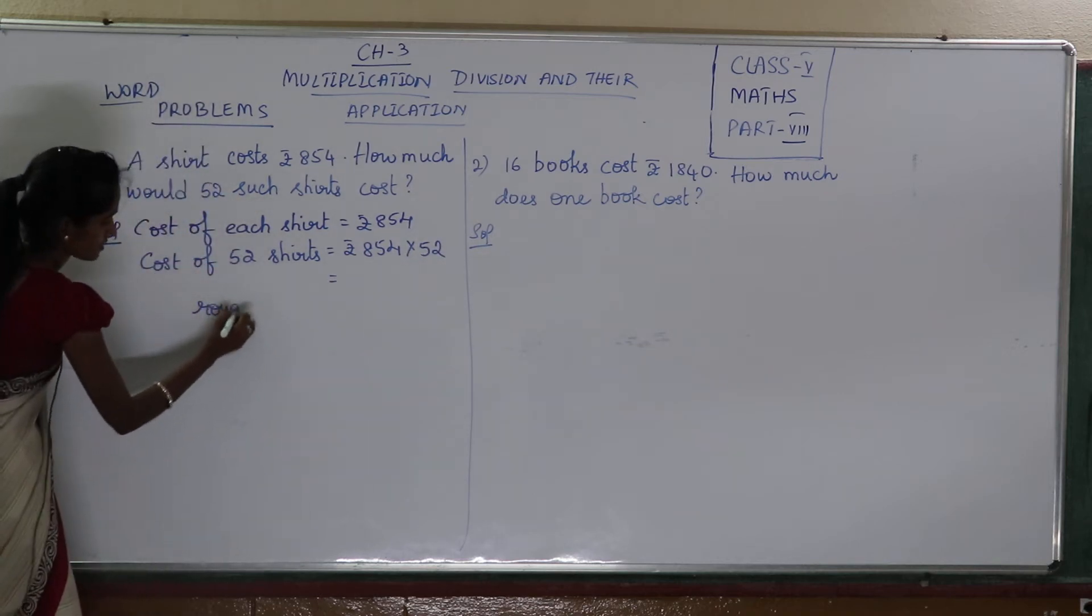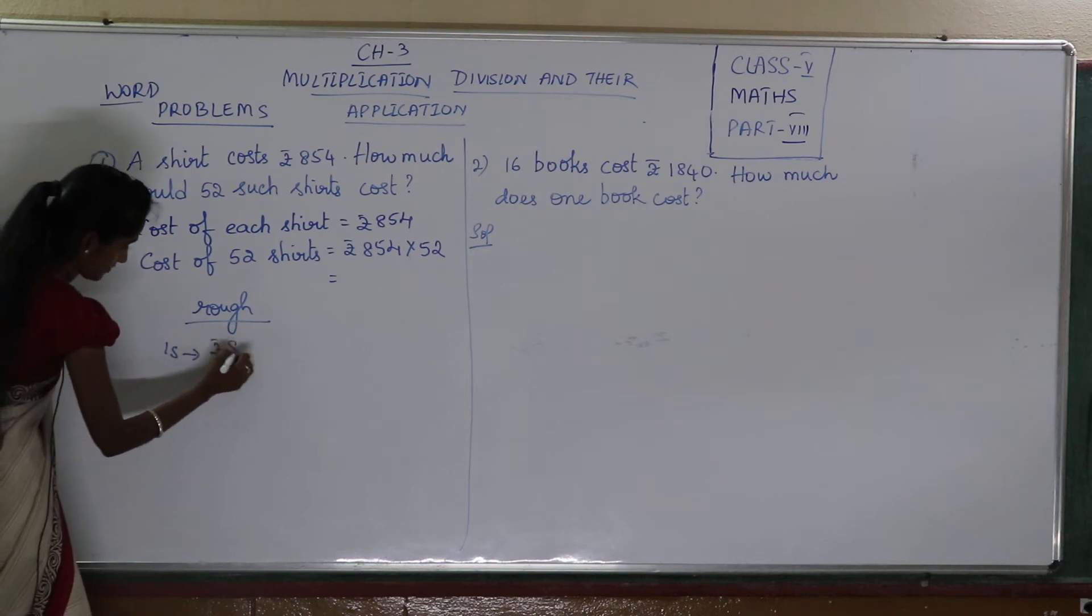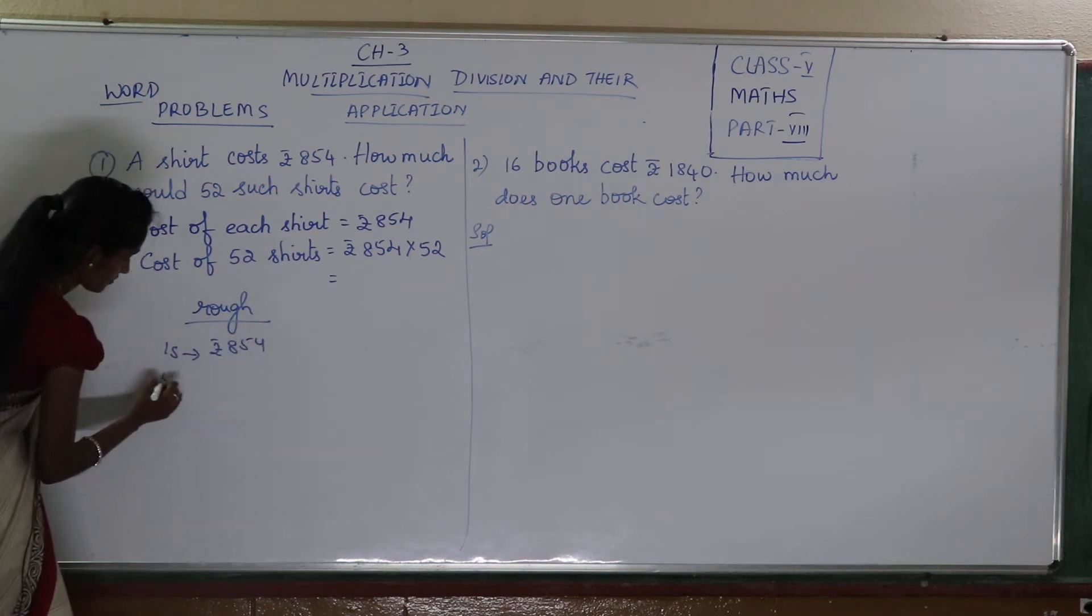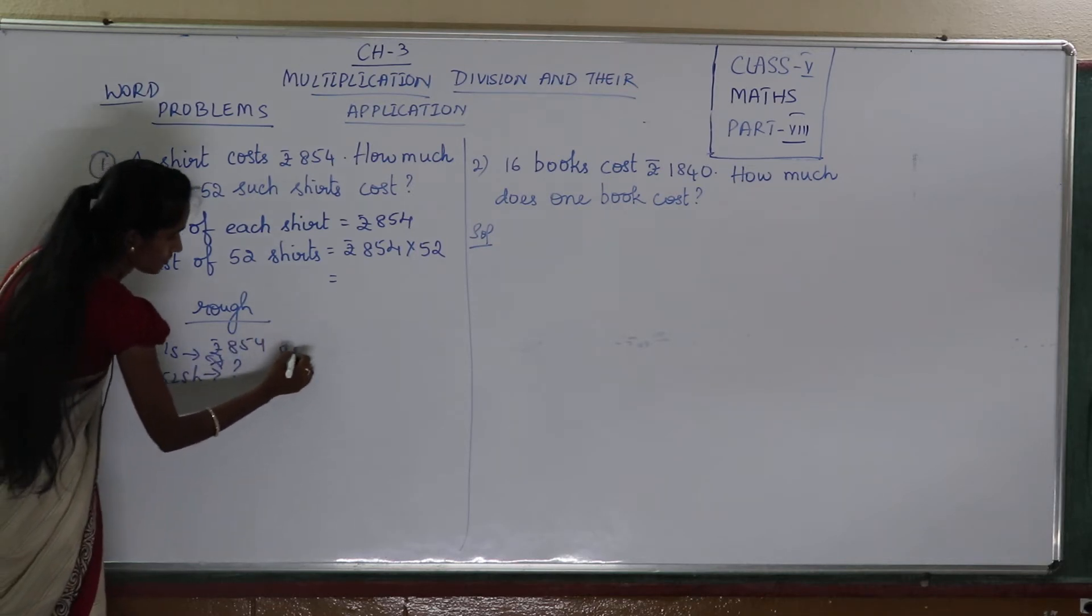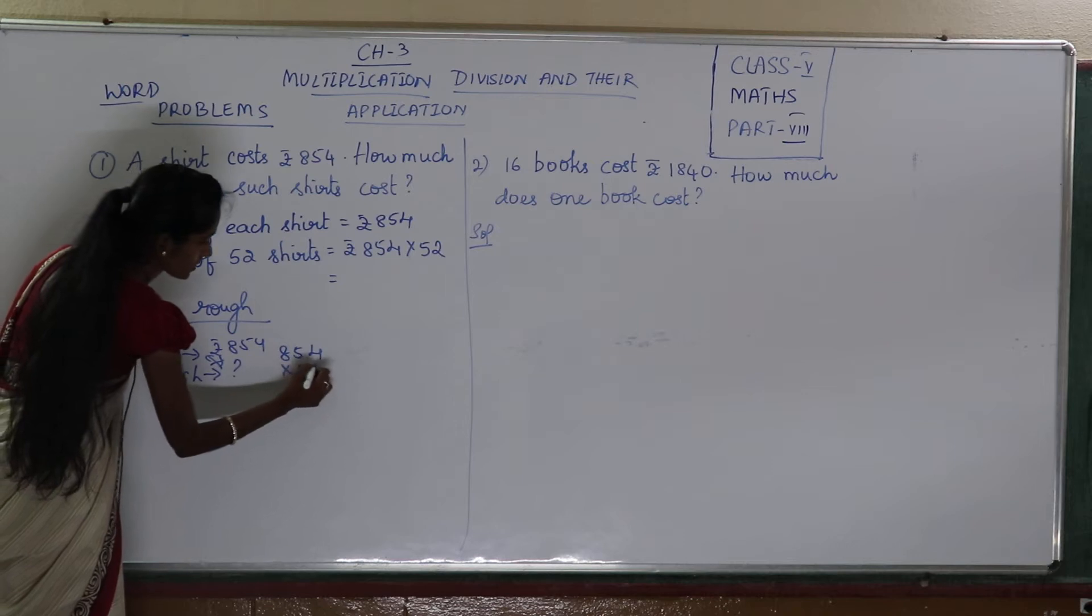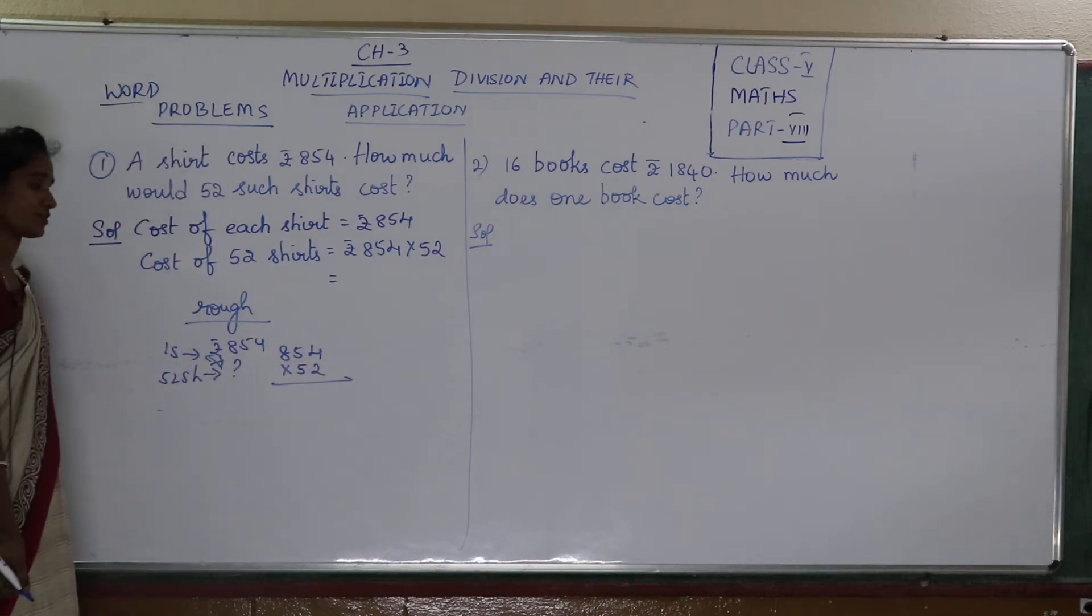Now this all you have to do in the rough column children. One shirt cost is 854. Now 52 shirts cost is how much? Now see 854 into 52. This is my multiplication. Very carefully we have to do that.